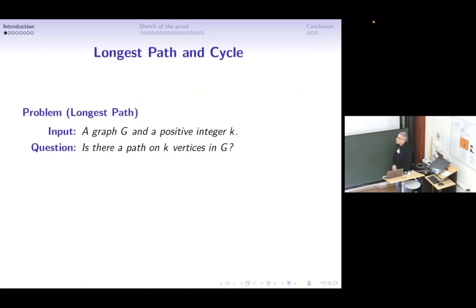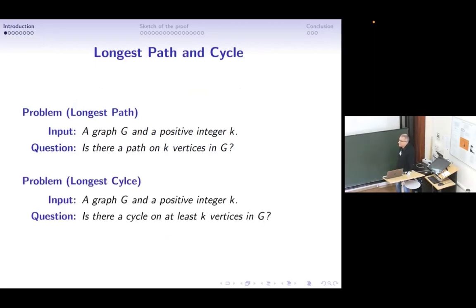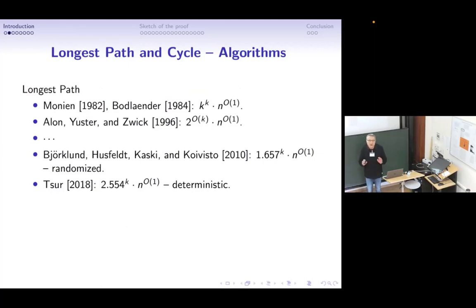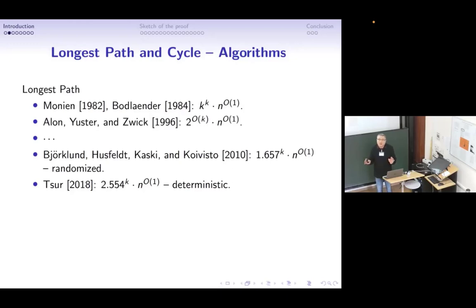We are going to discuss the classical longest path and longest cycle problems. There is a long list of algorithmic results about these problems. Of course, these problems are hard. Hamiltonian cycle and Hamiltonian paths are well-known hard problems. There are very many constantly improving results about parameterized complexity, because this is a parameterized complexity workshop.